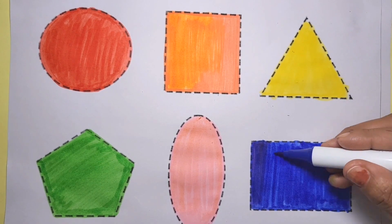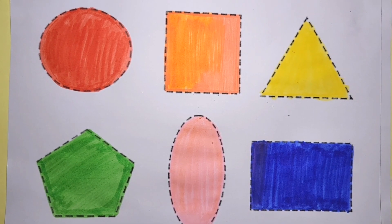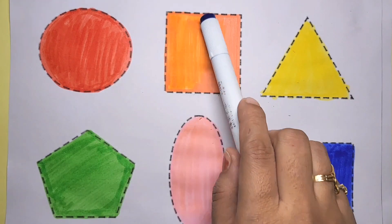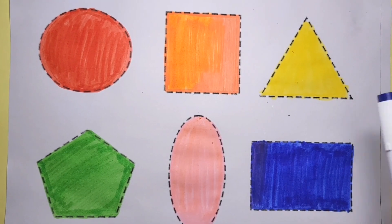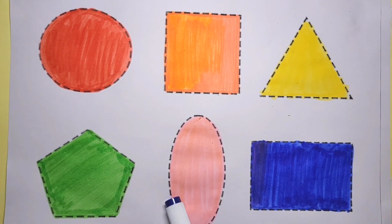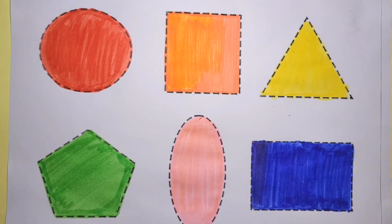Wow, there are many shapes in different colors. If you like my video, please subscribe to my channel. Let's learn shapes: circle shape red color, square shape orange color, triangle shape yellow color, pentagon shape green color, oval shape pink color, rectangle shape dark blue color. Please like my video and subscribe to my channel. Bye bye, kids.